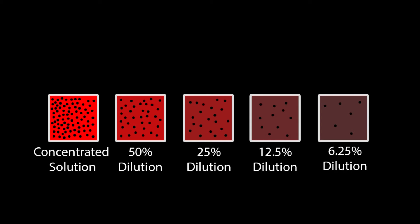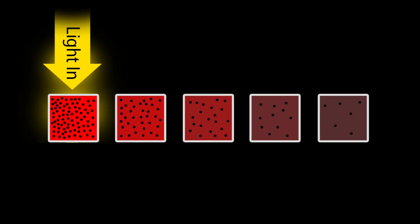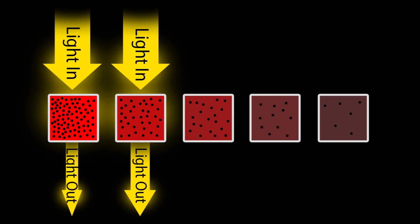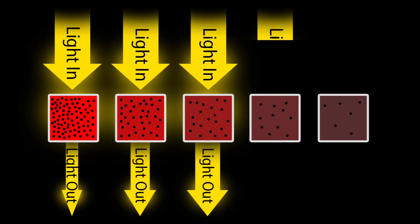Because there are more molecules for the light to be absorbed by in the concentrated solution, we will see very little light come out the other side. But if we dilute that solution, there are less molecules for the light to be absorbed by, and therefore we are going to see more light come out the other side. This trend will continue all the way down the line.